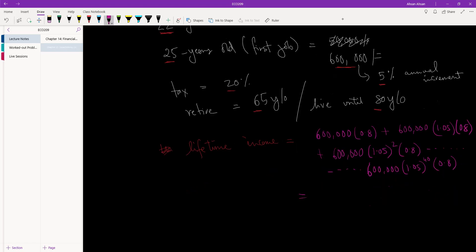Now, of course, we can calculate all of this using a calculator, but that seems like a pretty tedious process. If I were to simplify this a little bit, what I can write is we have 600,000 times 0.8. In here, we have 1 plus 1.05 plus 1.05 squared plus 1.05 cubed,